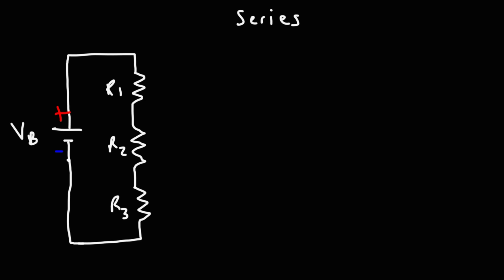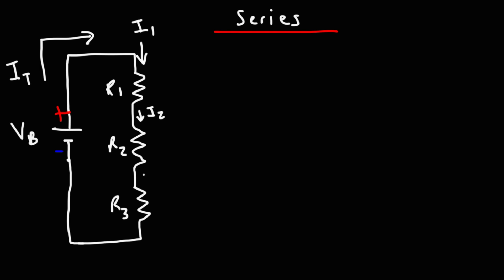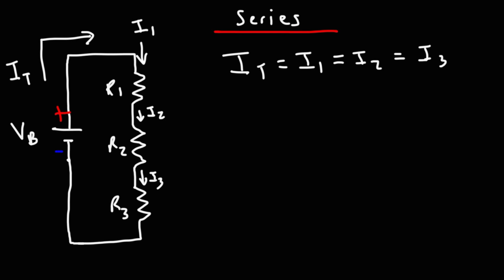In a series circuit, the current flowing from the battery — we'll call it IT — is the same current flowing through resistor 1 (I1), resistor 2 (I2), and resistor 3 (I3). Because there is only one path for the current to flow in a series circuit, I1, I2, and I3 are all equal to each other and equal to the total current from the battery.